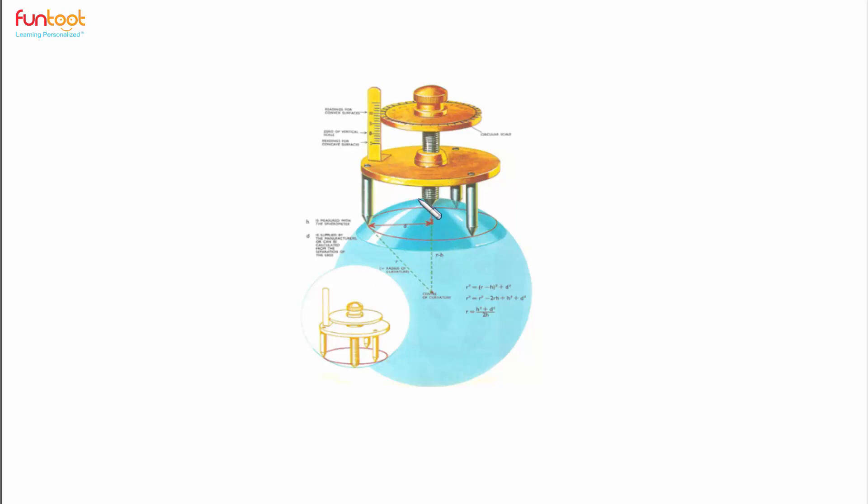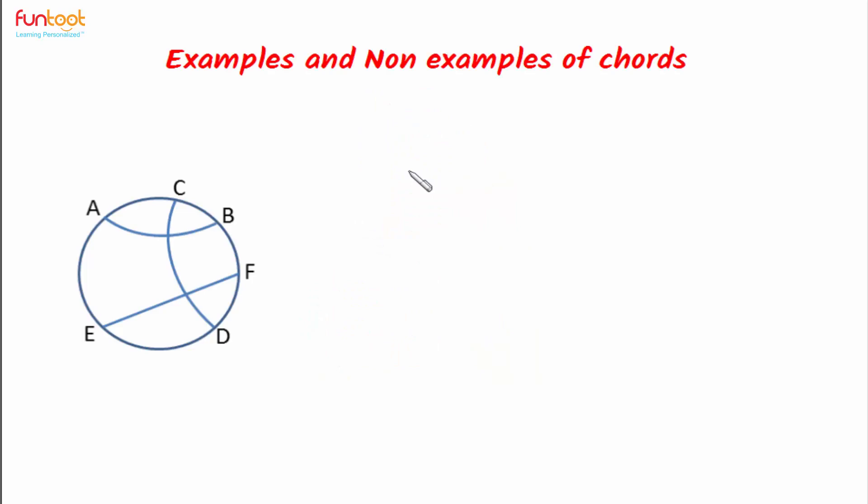Spherometer measures the radius of curvature of this spherical mirror using the properties of chords. Let's look at some examples and non-examples of chords. So here EF is a chord because it's a straight line joining two points on the circle. CD and AB are non-examples of chords because these are curved lines.